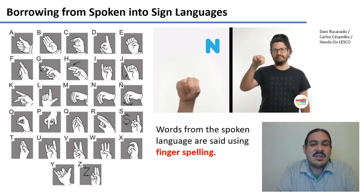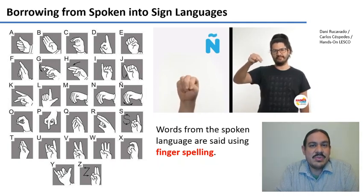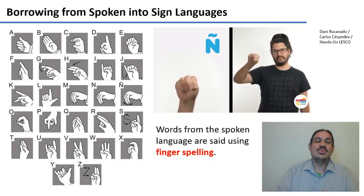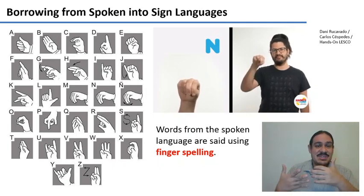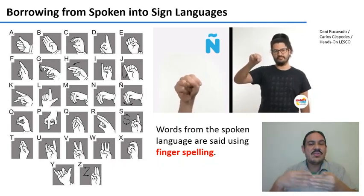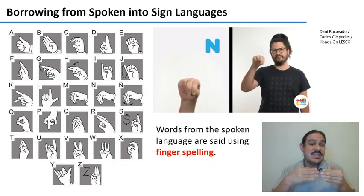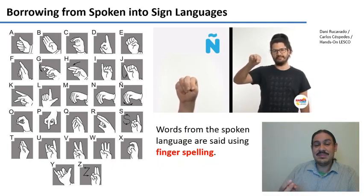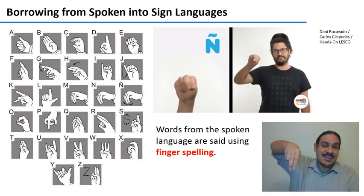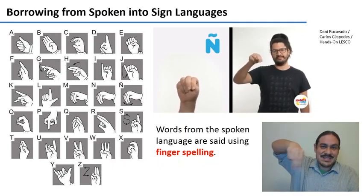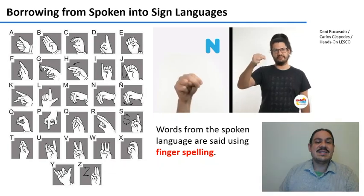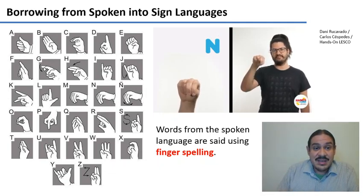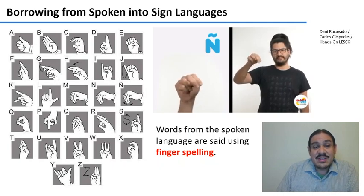This is the fingerspelling for Lesko, the sign language from Costa Rica. As you can see, it has the letters to import words from Spanish, which is the language that Lesko is most in contact with. This includes written letters like Ñ (eñe), as in año (year). So you can see that this is an element that the ASL one doesn't have. But if you look at them closely, many of the letters are indeed different.